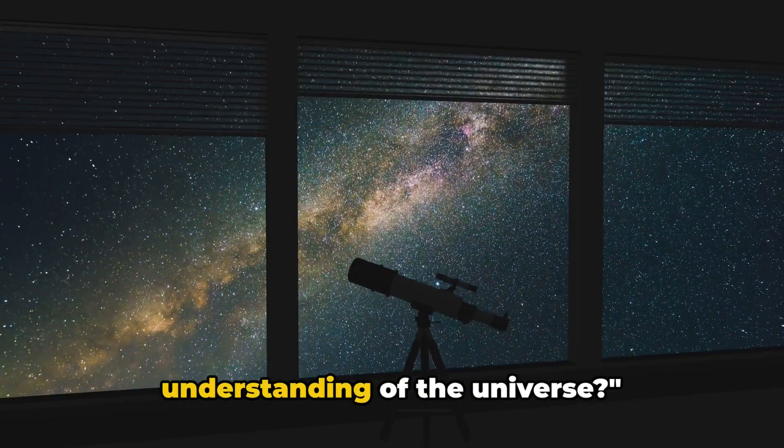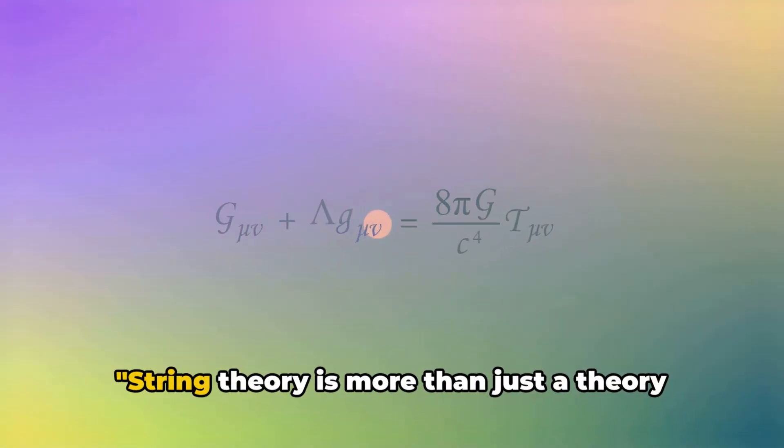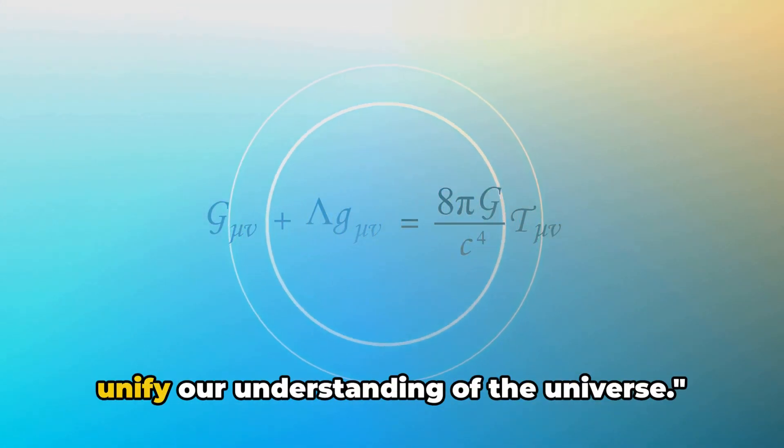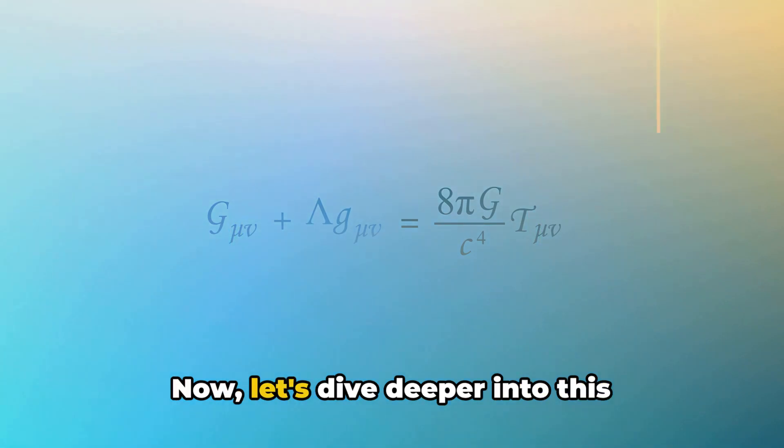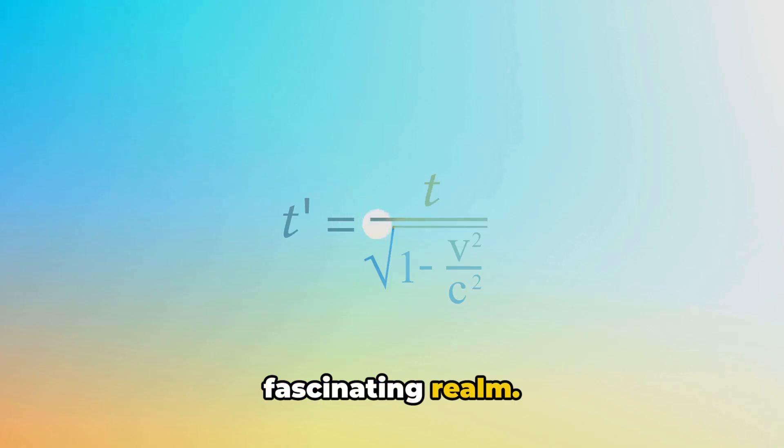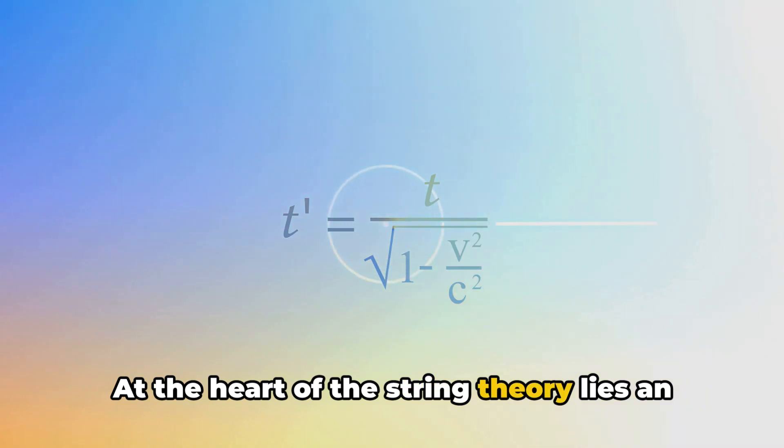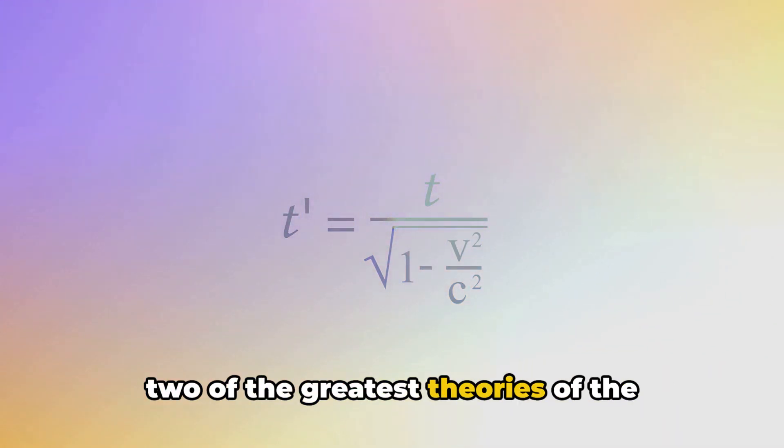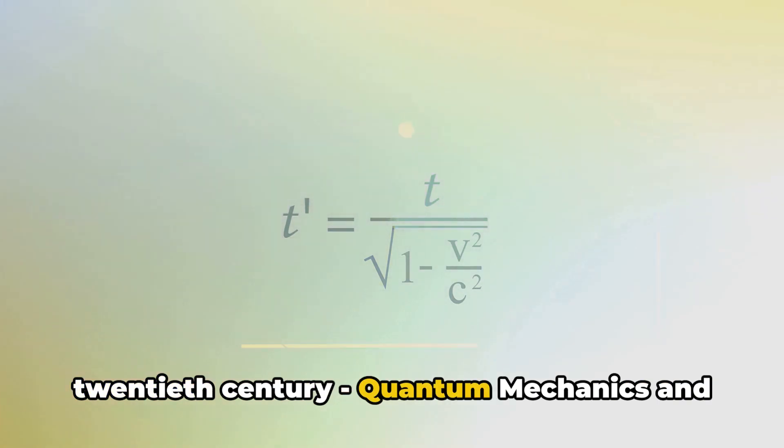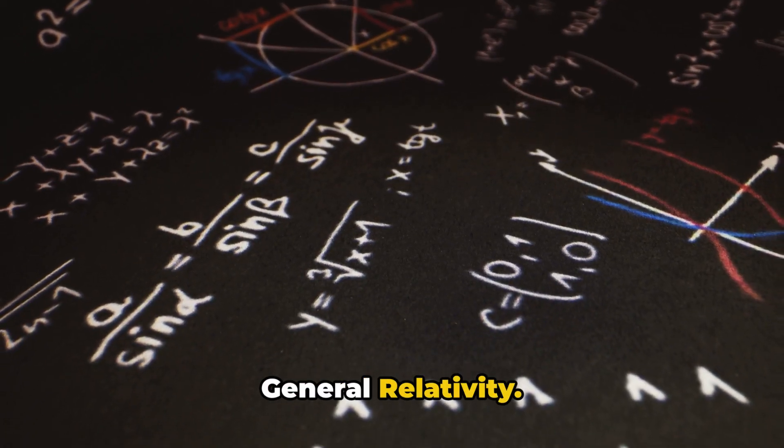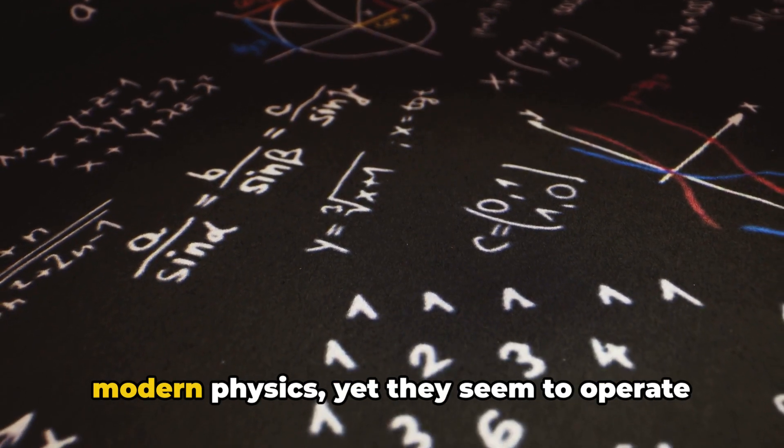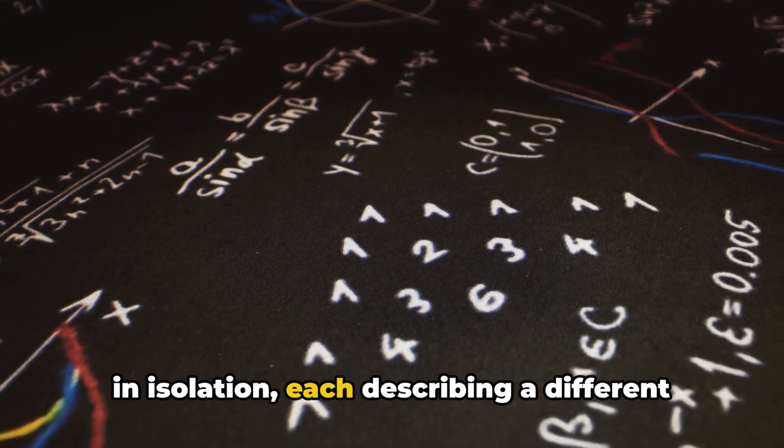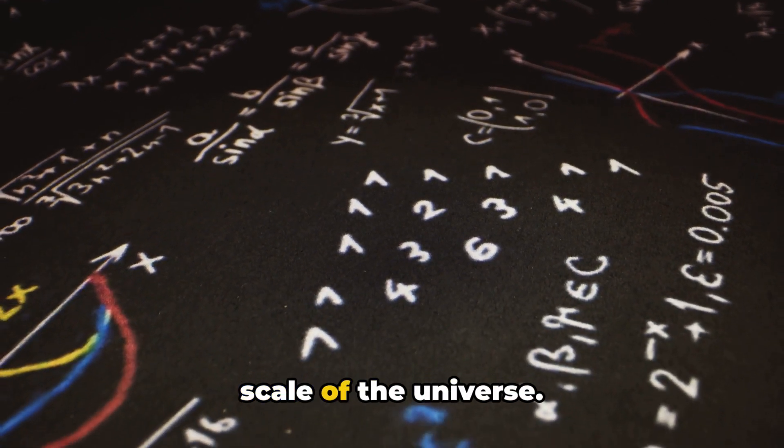But how does this relate to our understanding of the universe? String theory is more than just a theory about strings. It's a theory that could potentially unify our understanding of the universe. Now let's dive deeper into this fascinating realm. At the heart of string theory lies an audacious notion that aims to reconcile two of the greatest theories of the 20th century: quantum mechanics and general relativity. These two theories are the pillars of modern physics, yet they seem to operate in isolation, each describing a different scale of the universe.